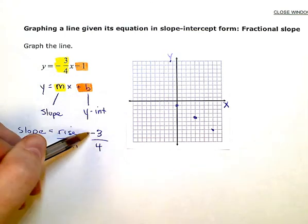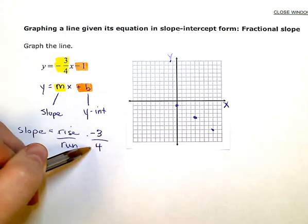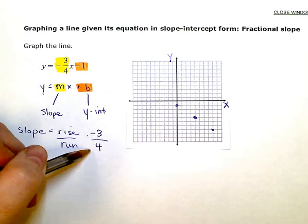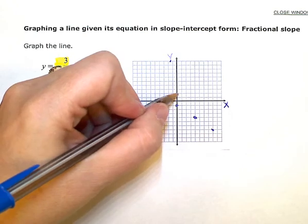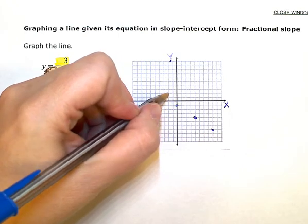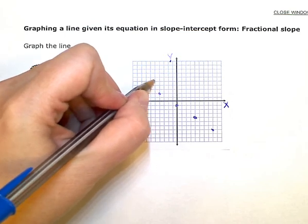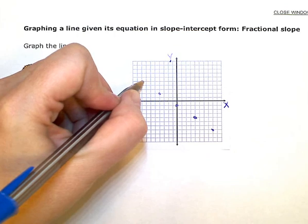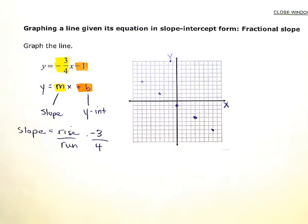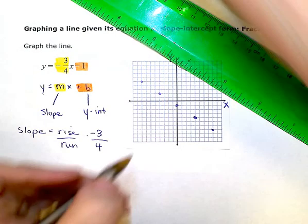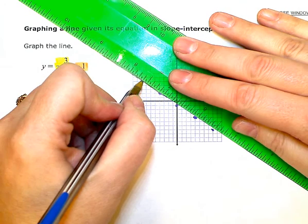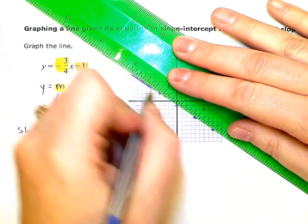So instead of down 3 over 4, I would go up 3 back 4. So up 3 back 4, up 3 back 4, until I get enough dots that I can line up a ruler and draw in an accurate line.